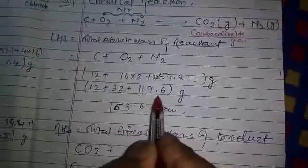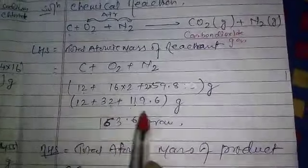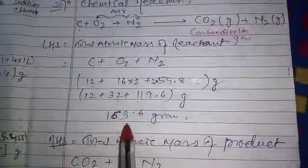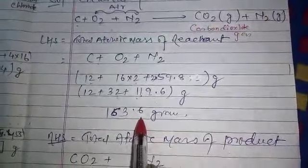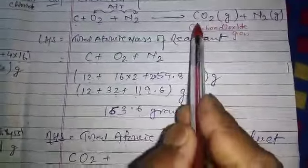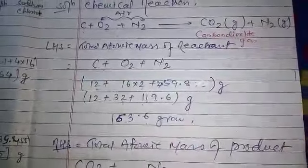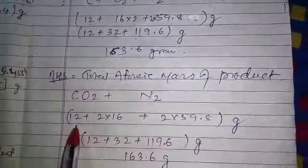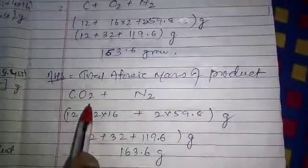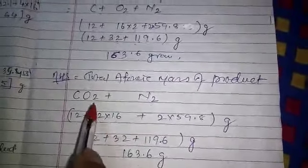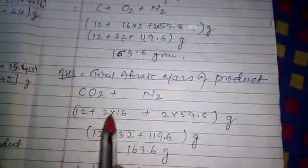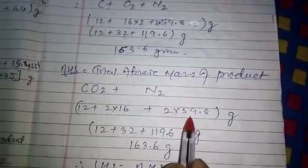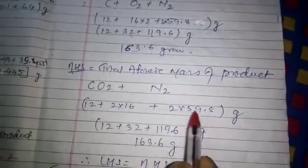And these three should be added: 163.6 gram. Now on the RHS, carbon dioxide gas and N2 gas are taken as product. So C's value, atomic mass, is 12. Oxygen is 16, there are 2 atoms here, so multiply by 2.